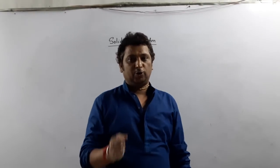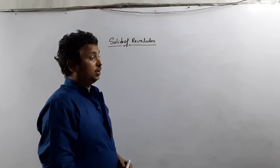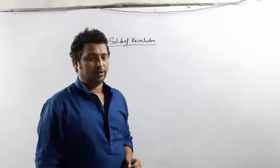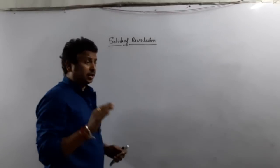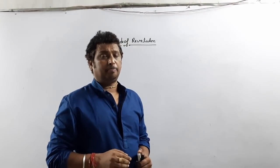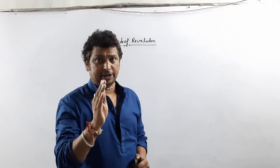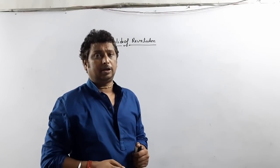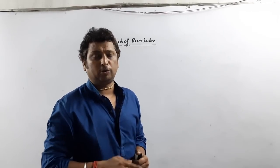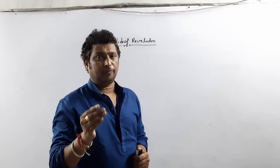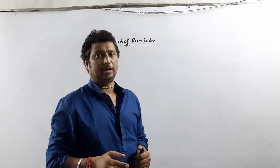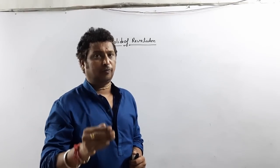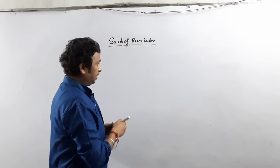Hello friends, today I am going to explain a very important topic: how we calculate the volume formed by solids of revolution. A solid of revolution means a solid which is formed by revolving a plane region — y equals f(x) or whatever — about some axis, either x or y, or about a line. A solid generated by revolving a plane region in its plane about an axis is called a solid of revolution.